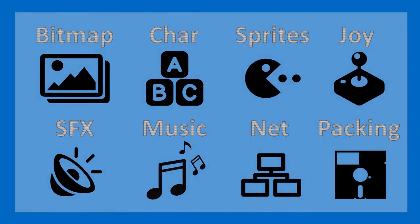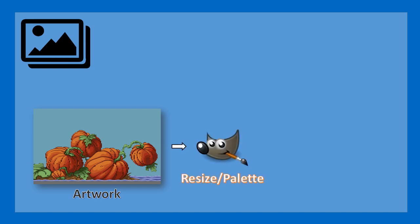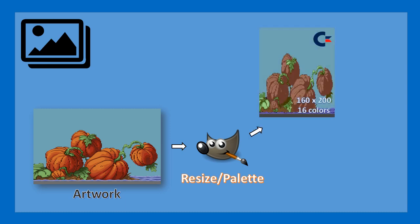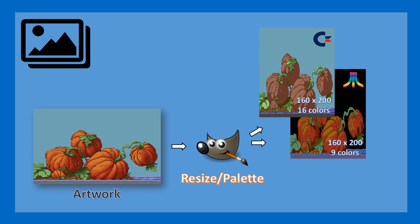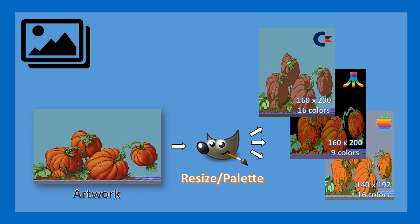Let's look at the functionalities included in the initial release of 8bit Unity. Starting with bitmap artwork, which you will have produced on your PC with any resolution and number of colors you like. To convert to the various platforms, I provide some palettes for GIMP in the SDK. Using GIMP, you'll be able to resize and remap the colors of your original artwork. On a Commodore you'll end up with 160 by 200 resolution in 16 colors, on the Atari 160 by 200 in 9 colors, and on the Apple 140 by 192 in 16 colors.